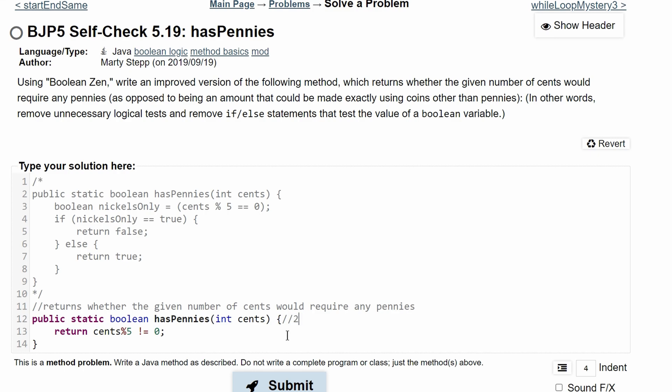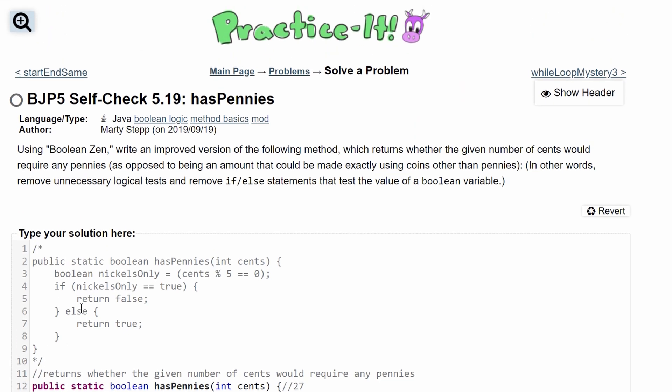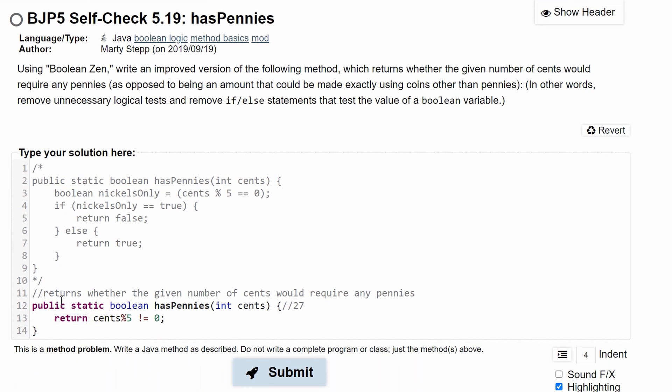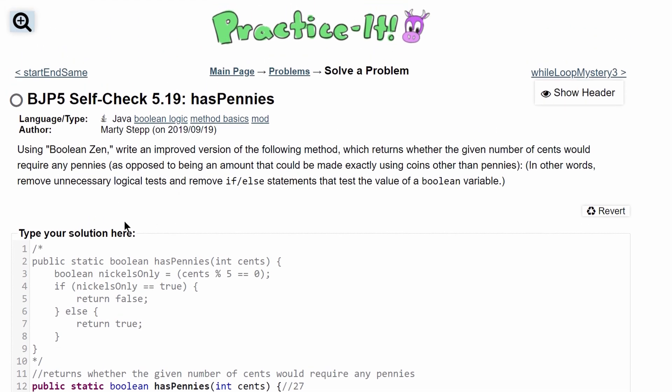So what we can do is put in 27 here, and then we can do 27 modulus 5 does not equal zero. This is true because 27 modulus 5 is 2, and 2 does not equal zero. So this will return true, meaning we will have to add pennies. And that is the correct code for this problem.